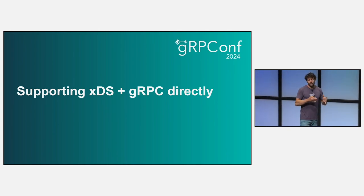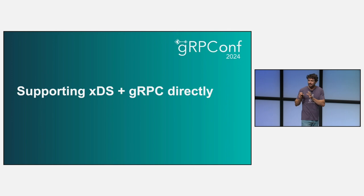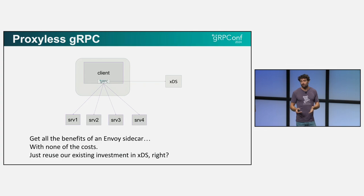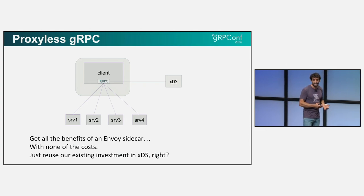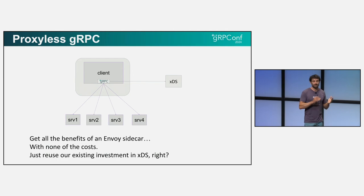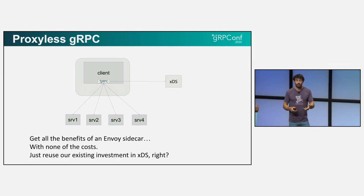The sidecar approach worked for some users and is very useful in specific cases. But for a lot of our applications, the cons clearly outweighed the pros. At the same time, our users really want those features I listed before. That brings me to proxyless — the idea that instead of having a sidecar source service discovery information from XDS, we connect gRPC directly to the control plane and get some of these features. It's very compelling on paper, but in practice it turned out not to be as easy as we thought.